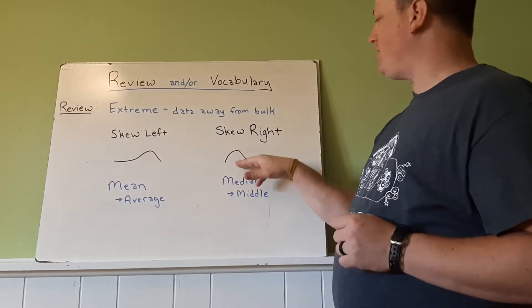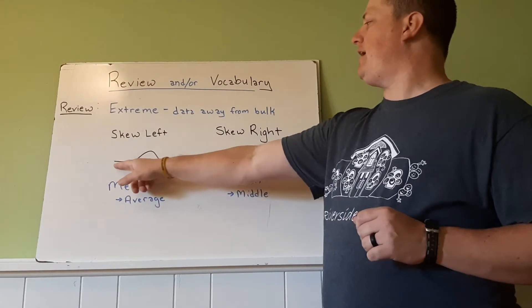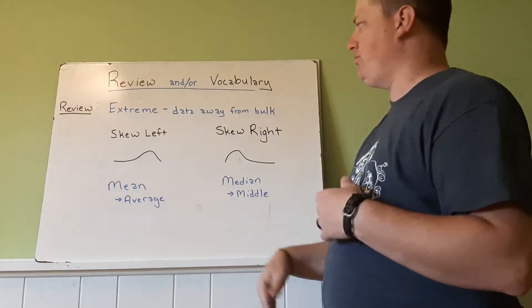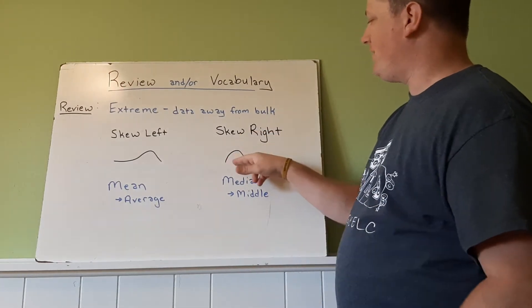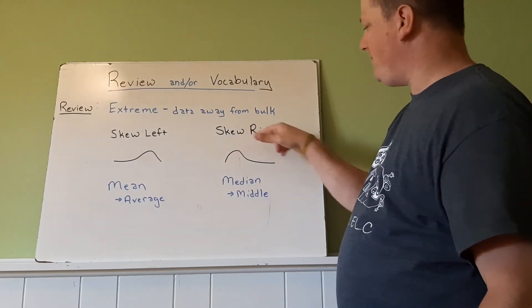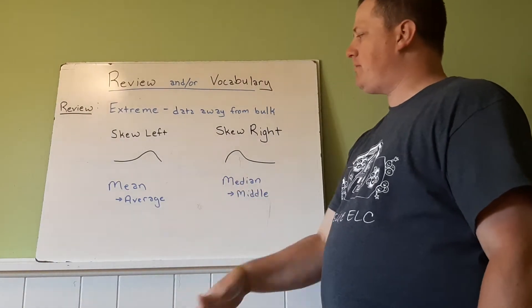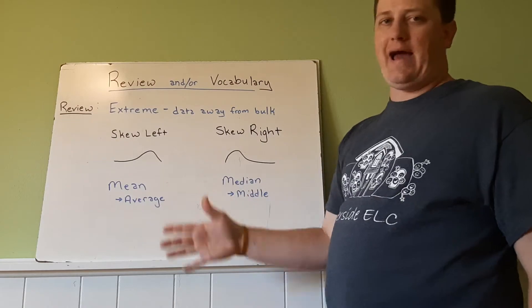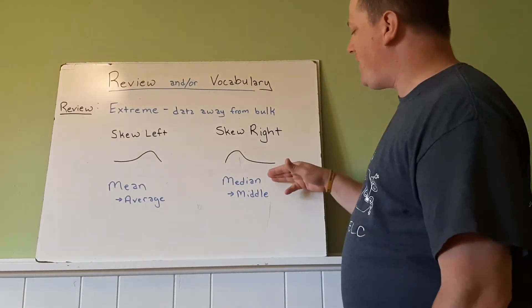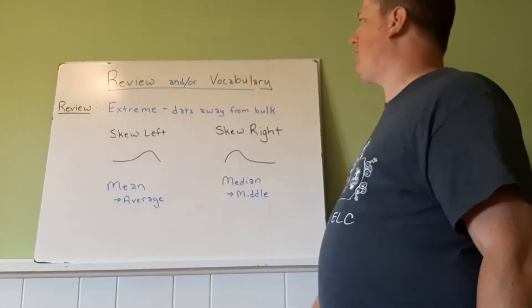Typically, we see this in things that look skewed. So, we have skewed left and skewed right data. Here, we have the bulk over here and a little bit of data on the left — skewed left. Here, we have the bulk of data here and a little bit of data to the right — that would be skewed right. Then we have two important words: mean, which is our average, and median, which is the middle of all of our data.